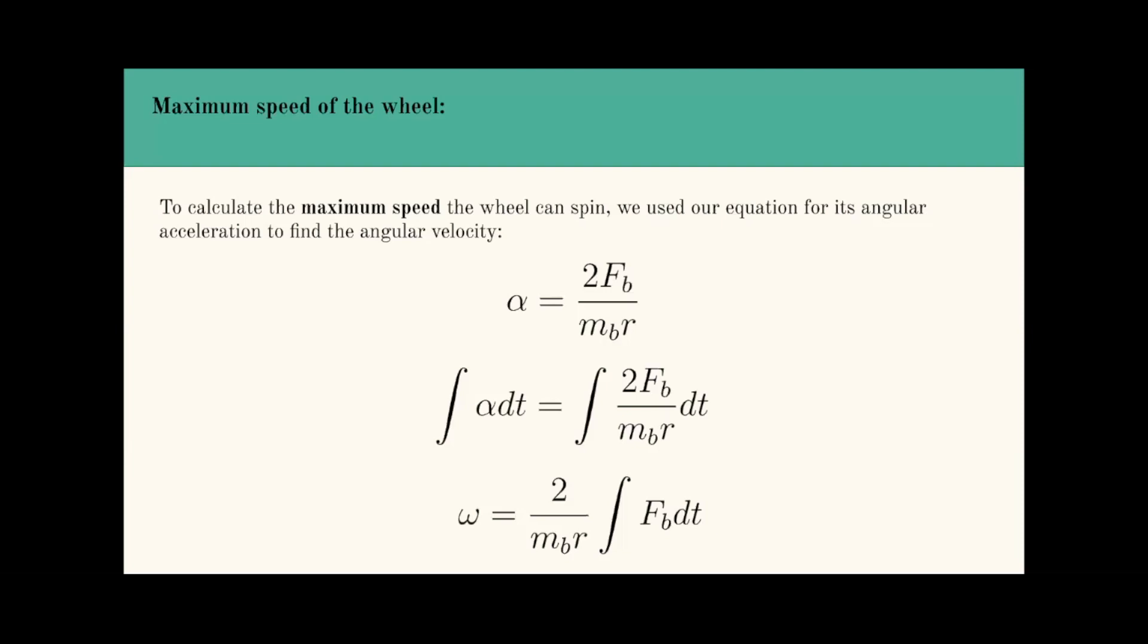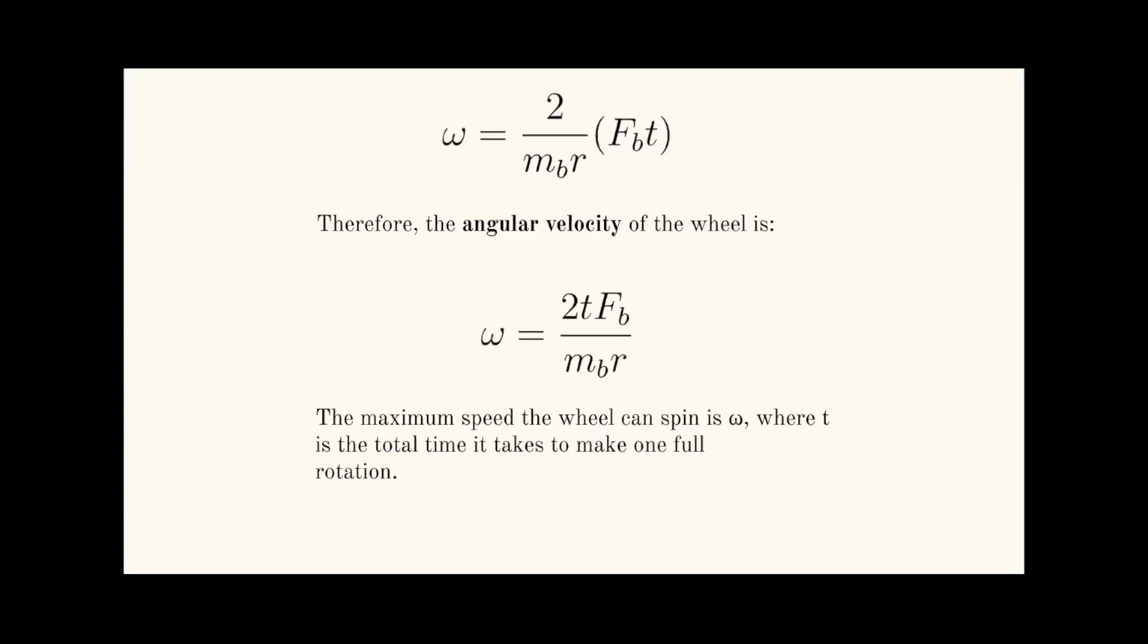To calculate the maximum speed the wheel can spin, we use our equation for angular acceleration to find the angular velocity. We took α = 2F_b/(m_b r) and took integrals of both sides. That's how we got ω = 2/(m_b r) ∫F_b dt, which equals ω = 2F_b t/(m_b r). Therefore, the angular velocity of the wheel is ω = 2tF_b/(m_b r). The maximum speed the wheel can spin is ω, where t is the total time it takes to make one full rotation.